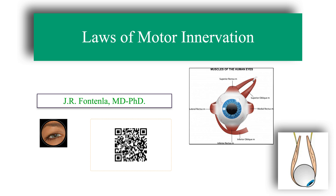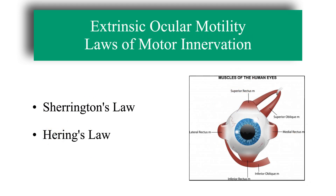Within extrinsic ocular motility, in this video we are going to talk about the laws of motor innervation. These two laws of muscle innervation are necessary for a good understanding of the dynamics of ocular motility, as well as the motor disturbances of binocular vision.